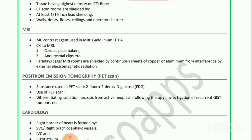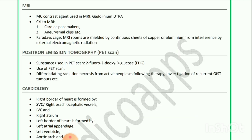MRI: The most common contrast agent used in MRI is gadolinium-DTPA. Contraindications to MRI include cardiac pacemakers and aneurysmal clips. MRI rooms are shielded by continuous sheets of copper or aluminium, known as Faraday's cage, to prevent interference by external electromagnetic radiation.